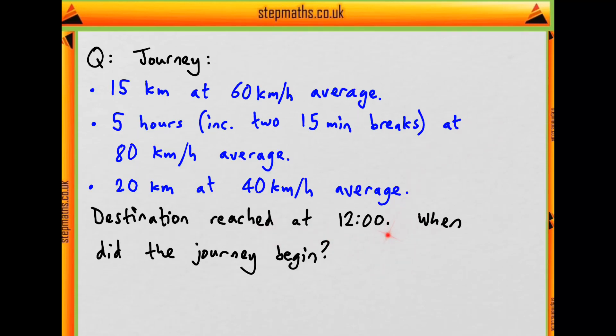So if we need the total journey time, what's the first thing we can note that can simplify this problem? We're told that the second stage takes five hours, including these breaks. So we don't actually have to worry about the average speed or these breaks or anything. We just need the fact that it's five hours.